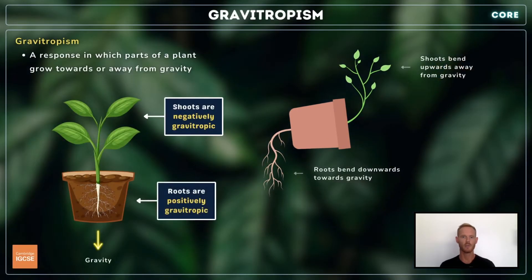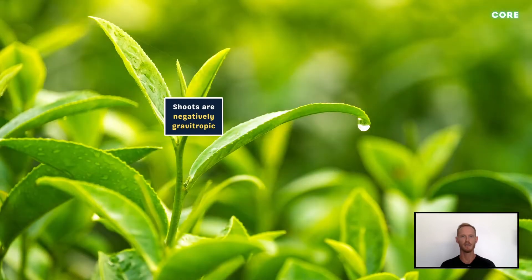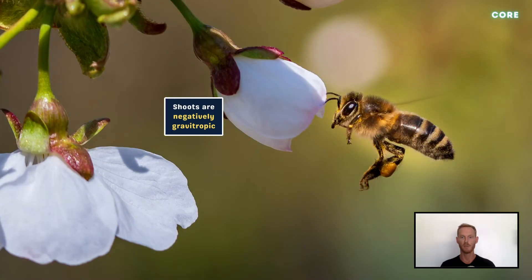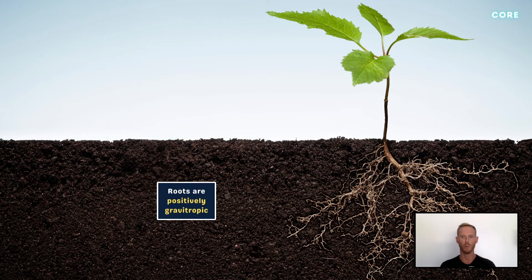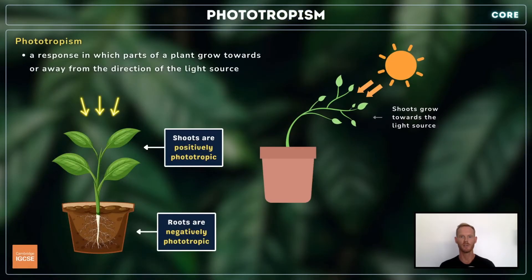Gravitropism is a response in which parts of a plant grow towards or away from gravity. Shoots are negatively gravitropic as they grow upwards away from gravity. This raises the leaves, helping the plant to compete for light and carbon dioxide, and moves the flowers into a beneficial position for pollination. Roots, on the other hand, are positively gravitropic as they grow downwards towards gravity. This anchors the plant and helps it to absorb water and minerals from the soil.